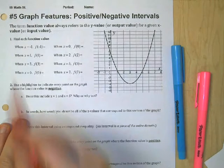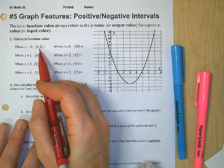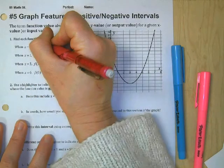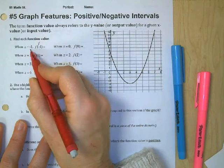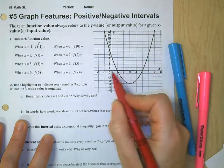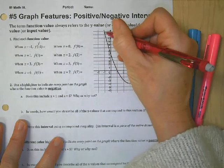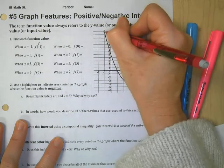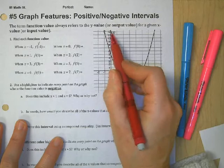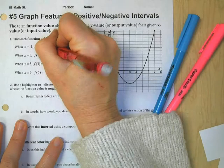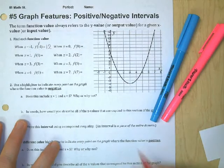So whatever number we get for y for a given x value or input. So when x is negative one, f of negative one, that would mean what is y when x is negative one. So let's find x is negative one. It's right here. Now I need to trace that up to the graph until I hit it. That would be right here. What's my y value? My y value is 12. Okay. So you should be able to do the rest of those.